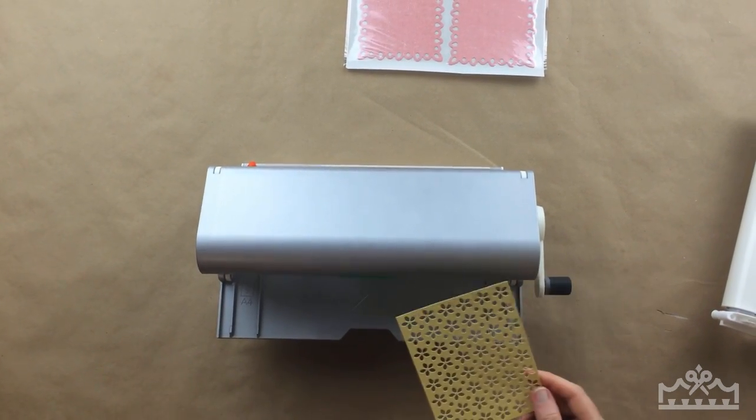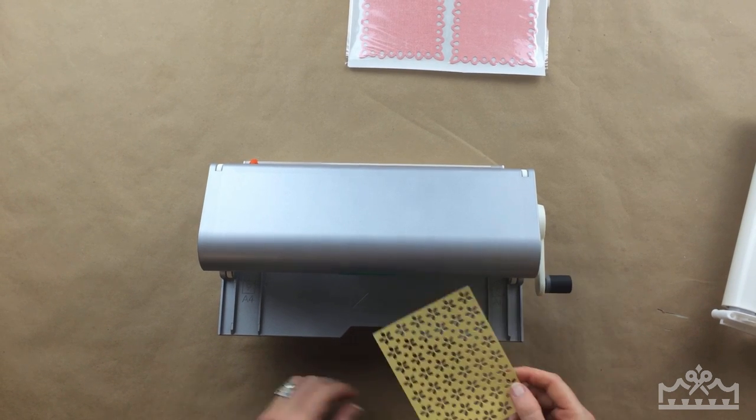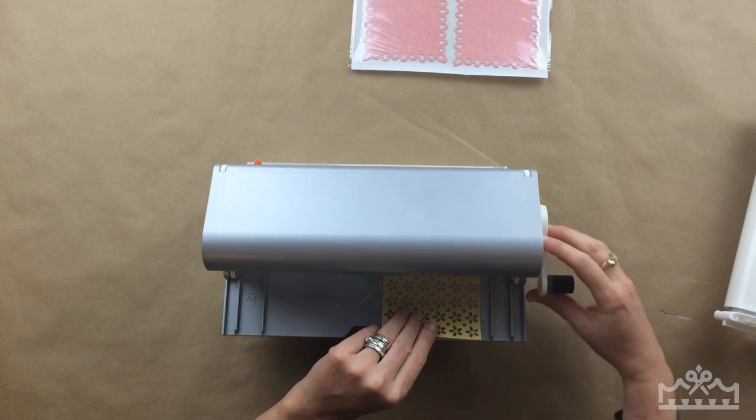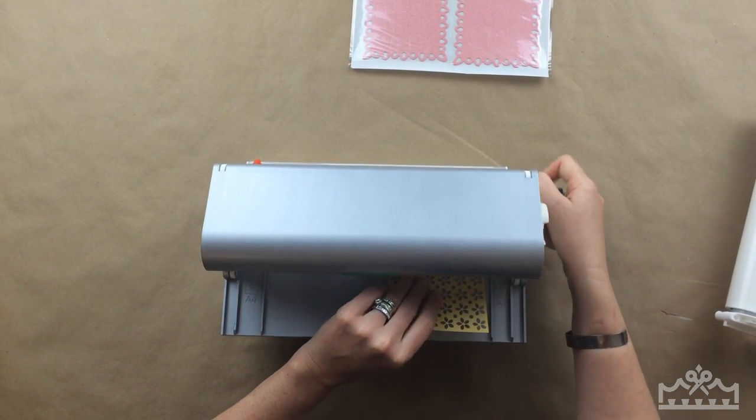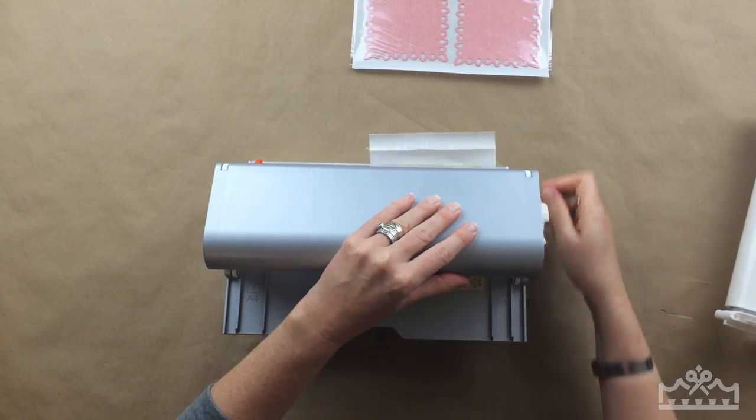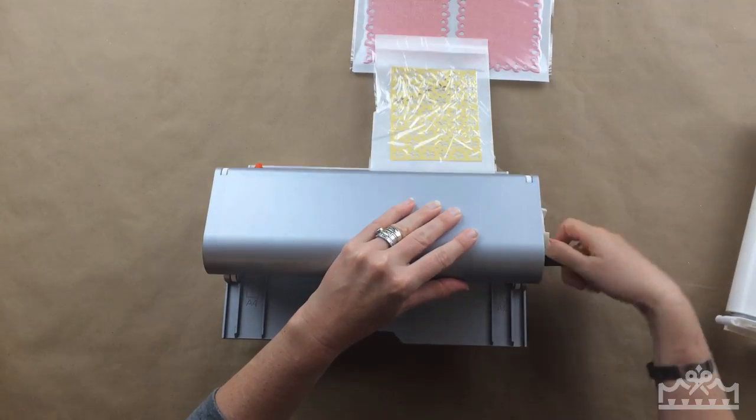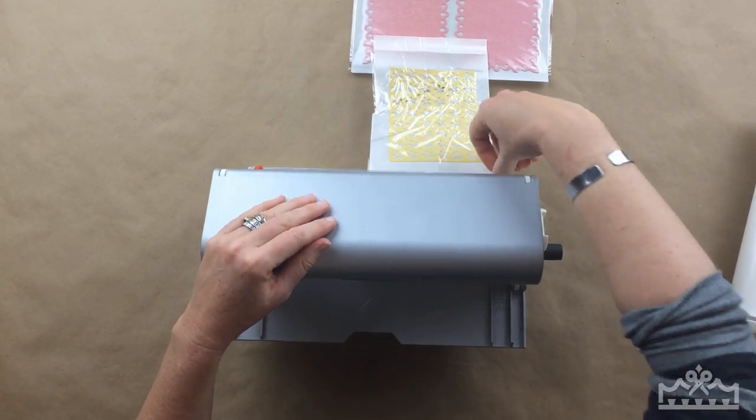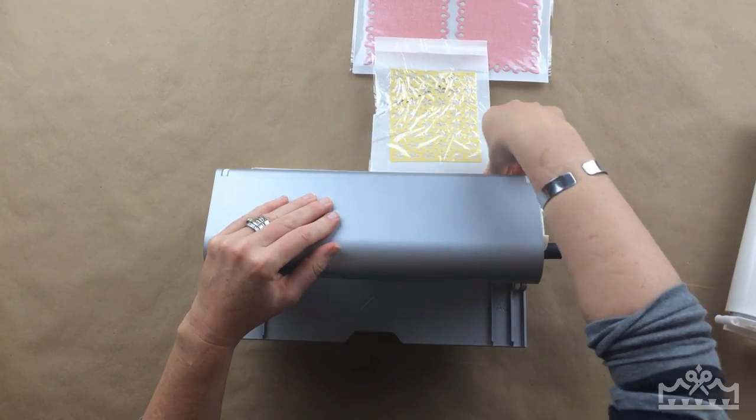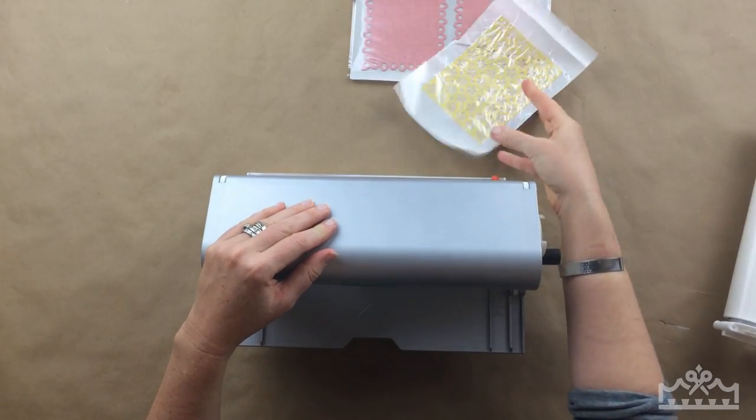Now if I want to do just one piece of paper, if I want to do some smaller embellishments, I just go ahead and load it into the machine, crank the handle, and I've got adhesive on my smaller project as well.